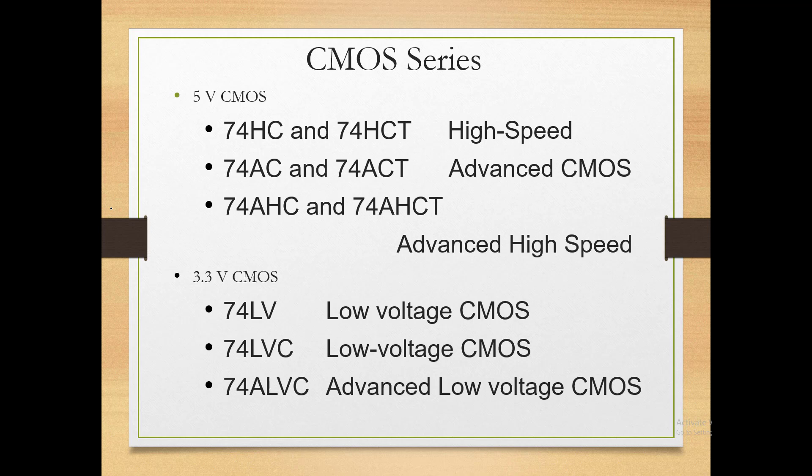The 5-volt CMOS series has three sub-series: 74HC, 74AC, and 74AHC. HC stands for High Speed CMOS, AC for Advanced CMOS, and AHC for Advanced High Speed CMOS. These alphabets tell us which CMOS technology is being used.